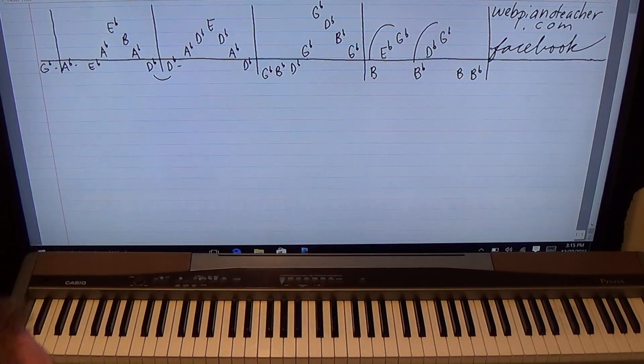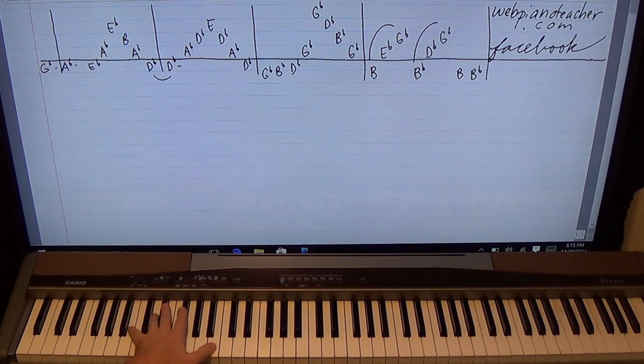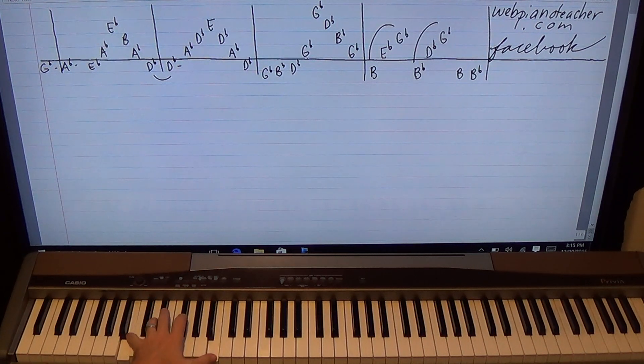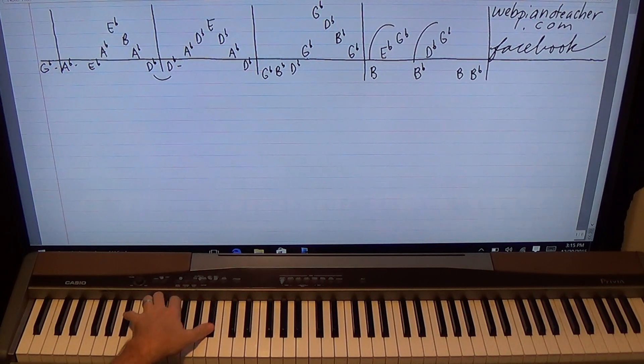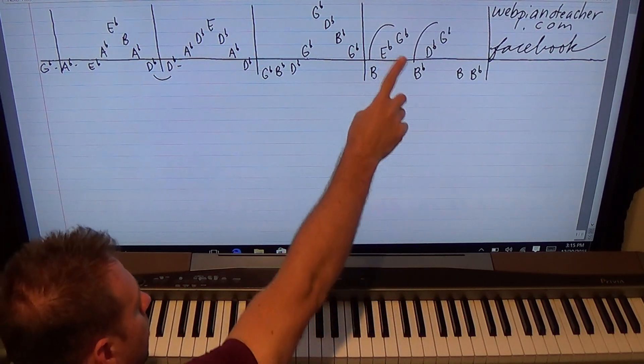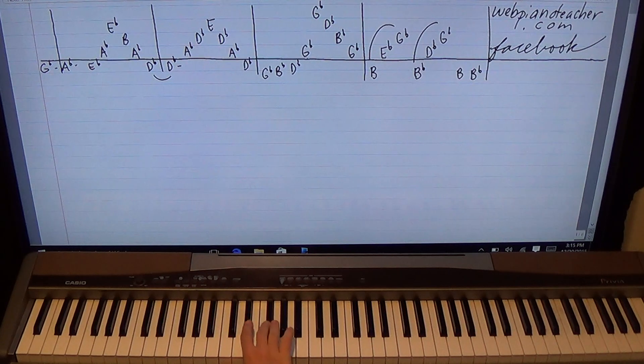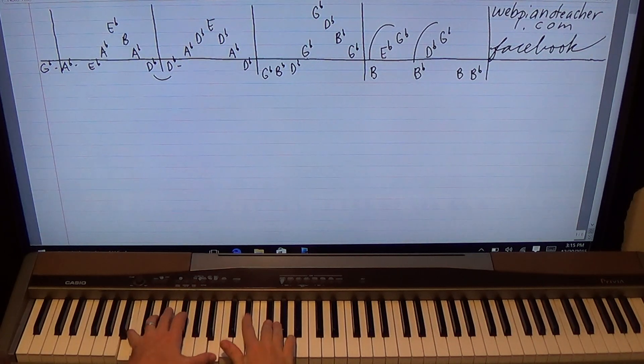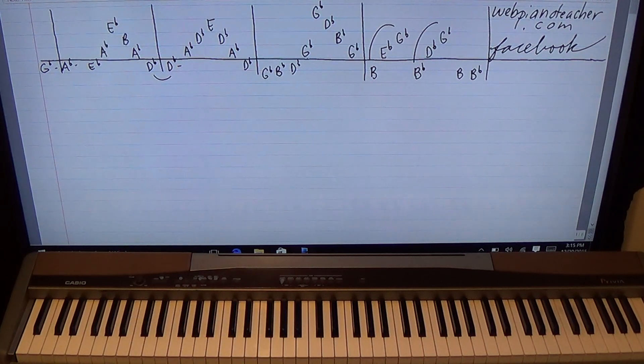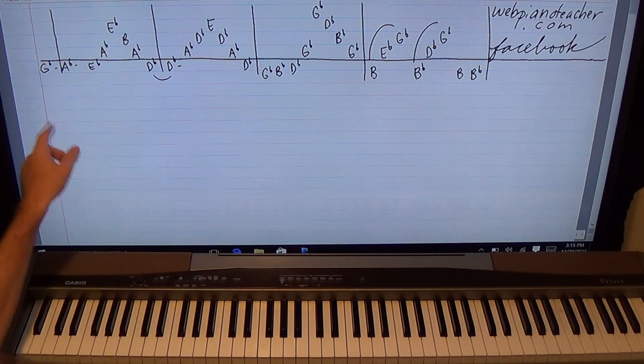Now here I'm going to do octaves on the left hand - B, B flat, B, B flat, A flat. Now notice with your ear you can hear that the melody here is in the left hand. The right hand is going to have notes in between - E flat, G flat, and then D flat, G flat on the second one. Okay, so the whole thing here.